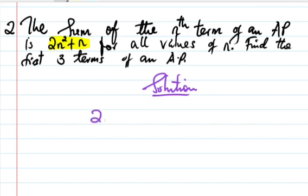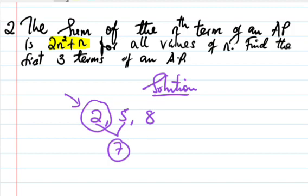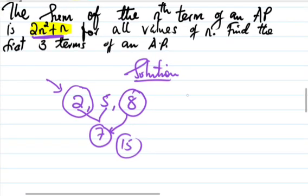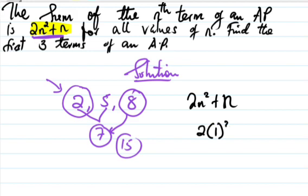The solution: for the first term, we put n equals 1. This formula is usually used to find the sum of terms. So we write 2n² plus n. We put n equals 1: 2 times 1² plus 1, which is 2 times 1 plus 1 equals 3. That's our first term.